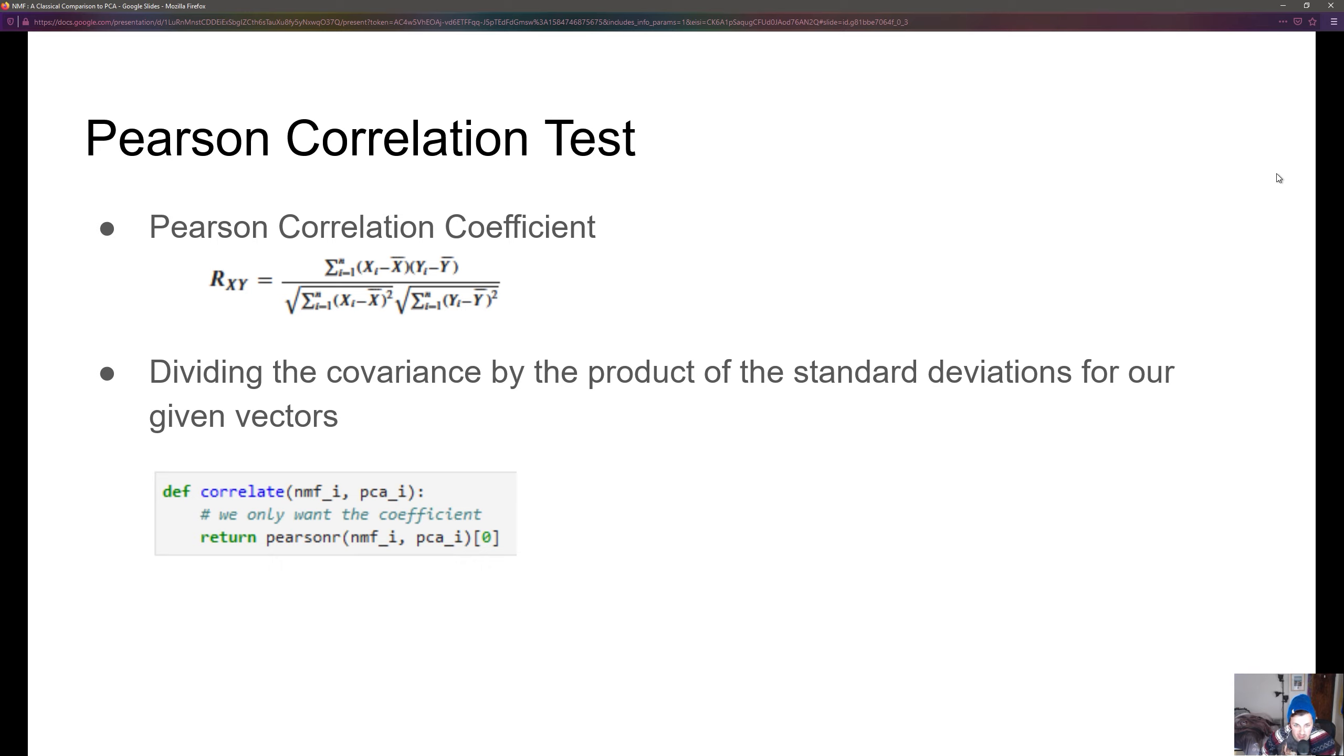In our code we can take NMFi and PCAi which are the specific basis vector pairs we want to correlate. This correlate function will return a value between negative 1 and 1 that tells us the correlation between the NMF basis vector and the PCA basis vector.